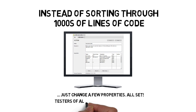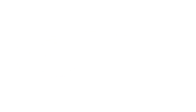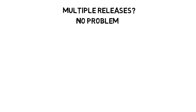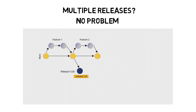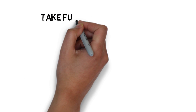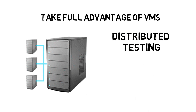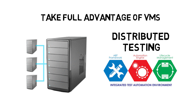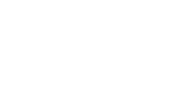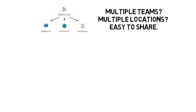Testers of all skill levels can develop automated tests with no or minimal programming support. Do you have multiple releases that need testing? No problem. Test Architect enables you to run a single test against all variations of your release, which means fewer tests for you to create and maintain. Test Architect allows you to take full advantage of VM technology. You can distribute your tests across multiple virtual machines, enabling you to run your tests against any number of configurations simultaneously, saving you a ton of time in the process. Plus, shareable repositories with version control make Test Architect great for large team projects in multiple locations.